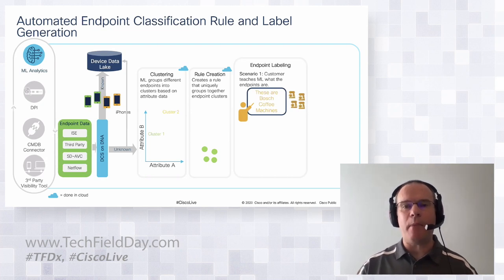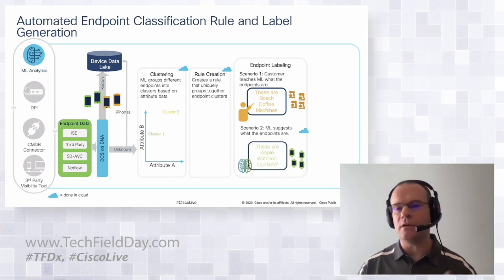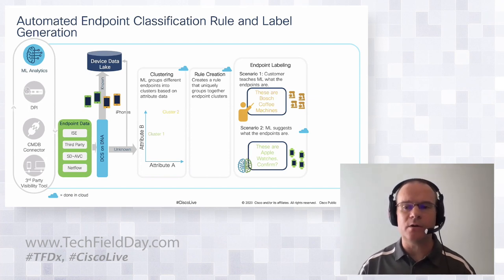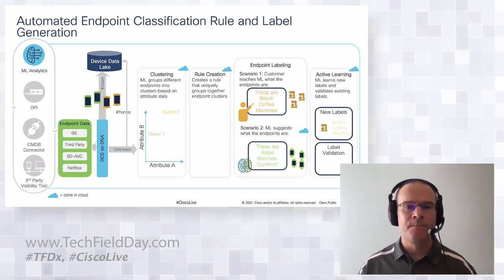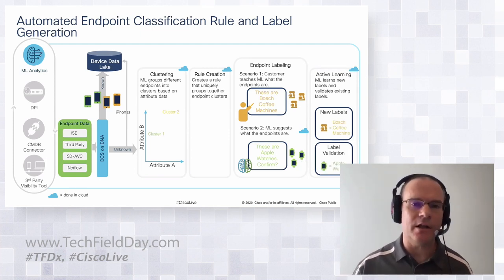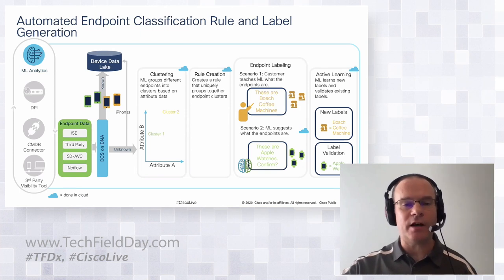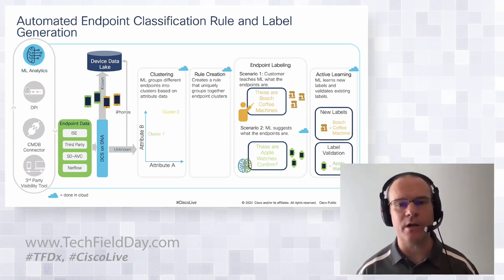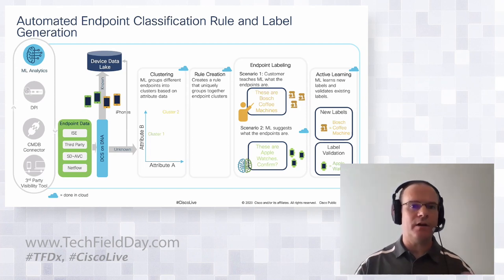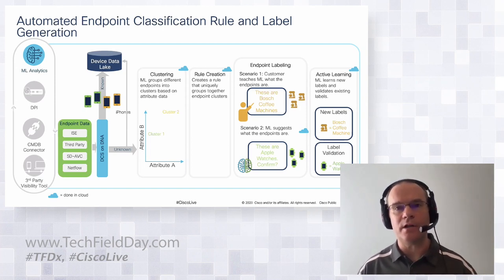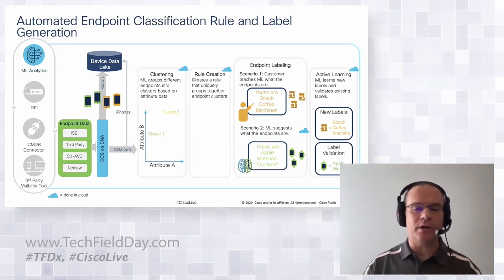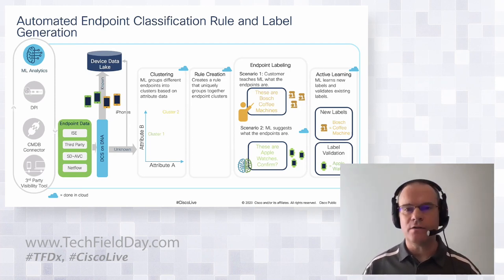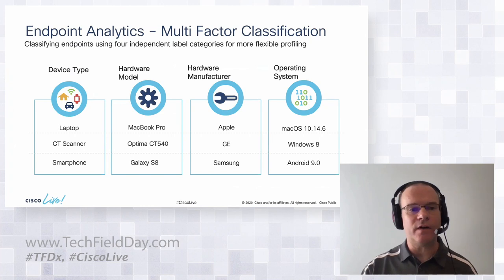We give that back to the customer, and the customer tells us what these different clusters are. In this example, it's Bosch coffee machines and Apple Watches. This is a real use case where we've got coffee machines connected to the internet — originally in a university lab environment so people could get telemetry about whether the next cup of coffee was ready, but also for inventory management and servicing the machine. That's the kind of connectivity that happens in these environments.